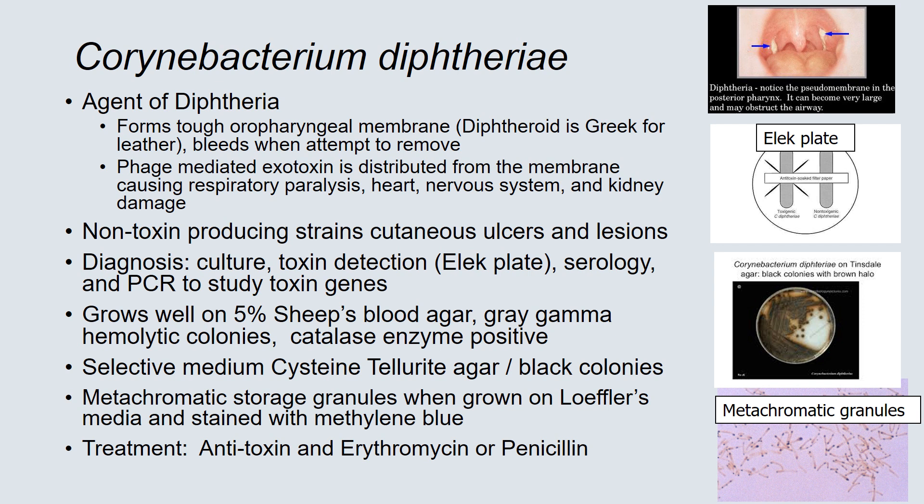Diagnosis of C. diphtheriae used to be dependent upon culture and toxin detection, looking for the toxin using an immunodiffusion method known as the Elek plate. More recently, serology and PCR have been used to study the toxin genes to confirm that the isolated C. diphtheriae is capable of producing toxin. The organism grows well on 5% sheep's blood agar, producing gray, gamma-hemolytic colonies that are catalase enzyme positive.